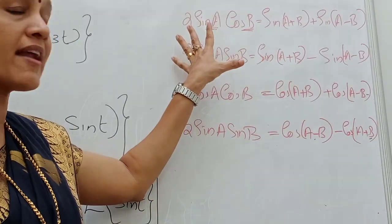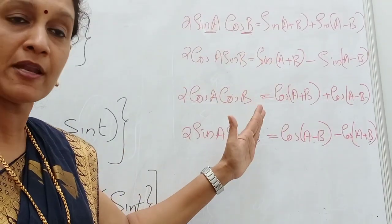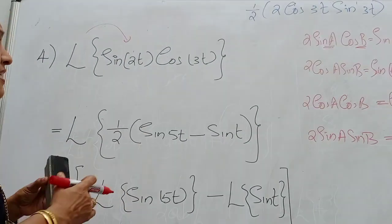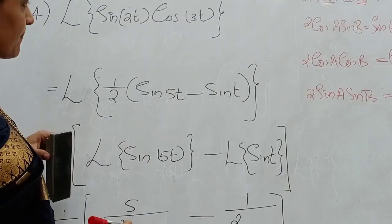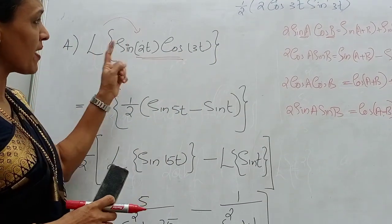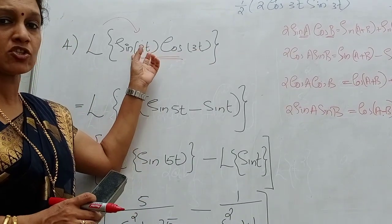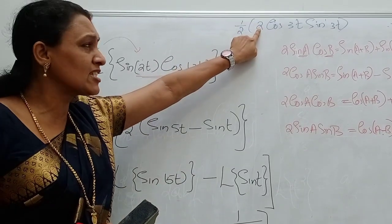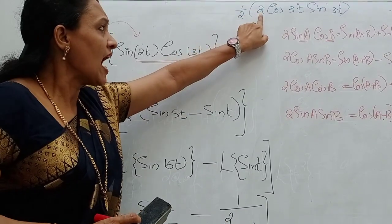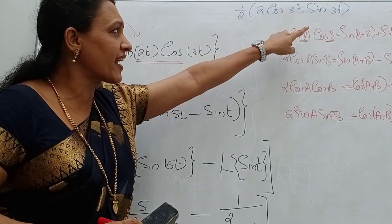Whenever you have a product like this, you convert it to a sum using AB formulae — you have to learn these equations. Now come back to this question. We have sine 2T into cos 3T, and we have to convert this product to a sum. In the equation we have 2 sin A cos B, but 2 is missing here, so I multiplied by 2 and divided by the same 2.